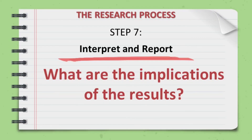Lastly, step seven is interpret and report. It answers the question: what are the implications of the results? This stage draws conclusions and recommendations, and generalizes the results and outcomes. Moreover, it requires presentation and sharing of findings through research colloquium and research defense.